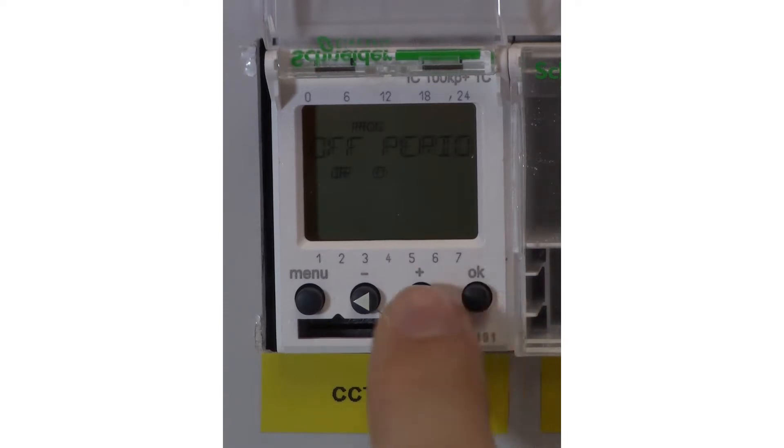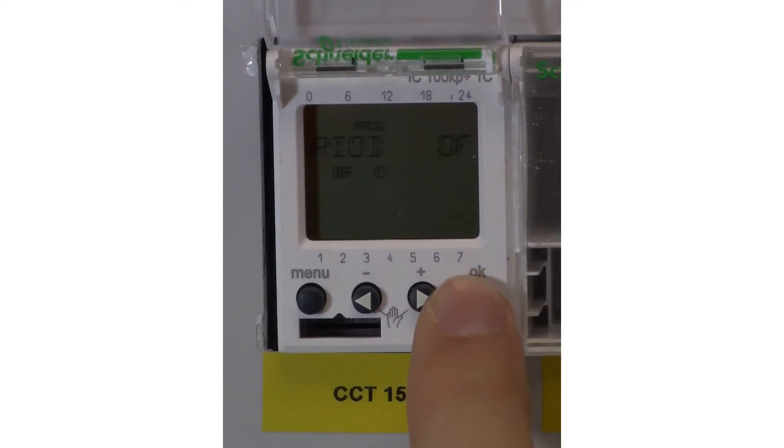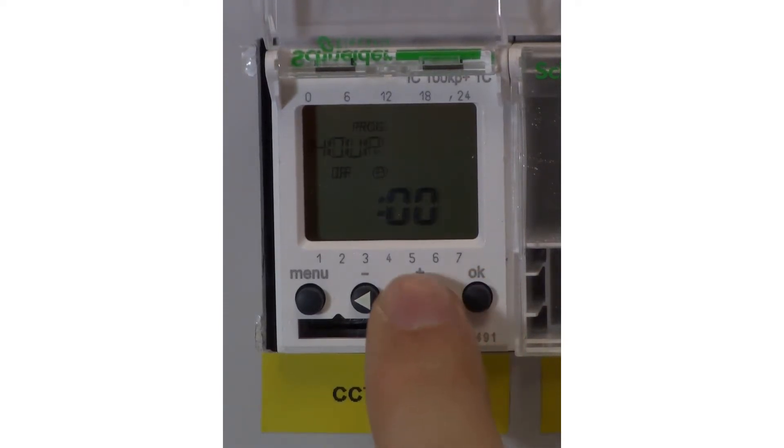Now we're going to set the off time. To do this, press menu, program, new, off, then select the time you want the program to turn off. And again, you go through the menu and select the days you want this to include. Once you've gone through the menu, then press save.